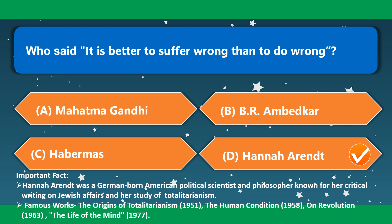Who said 'it is better to suffer wrong than to do wrong'? Hannah Arendt. Hannah Arendt was a German-born American political scientist and philosopher known for her critical writing on Jewish affairs and her study of totalitarianism. Her famous works include: The Origins of Totalitarianism (1951), The Human Condition (1958), On Revolution (1963), and The Life of the Mind (1977).